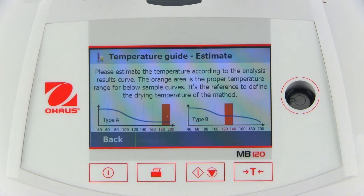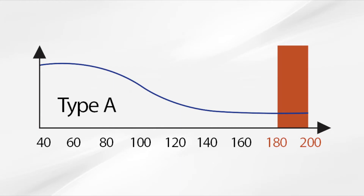In most cases, the graph will appear in one of two ways. In one case, the sample will reach the maximum temperature without burning or decomposing. In this instance, the maximum analysis temperature can be safely used to quickly dry the sample.